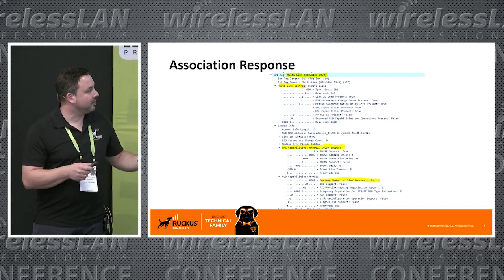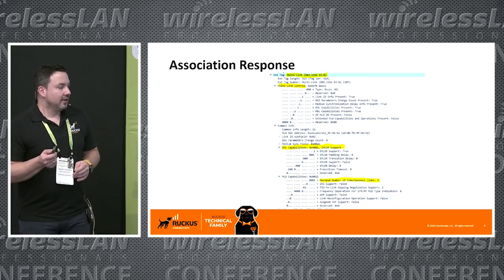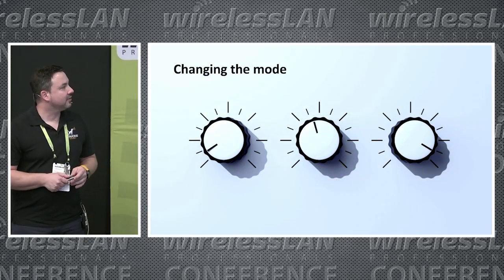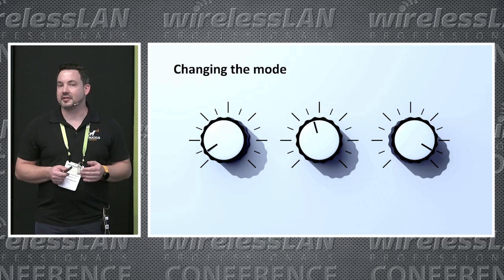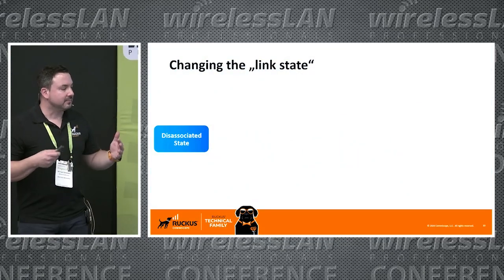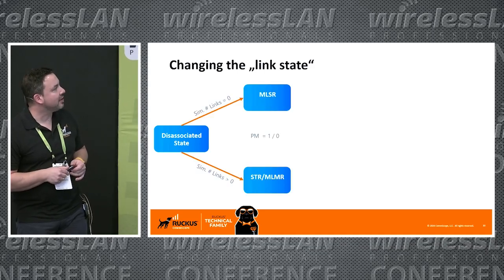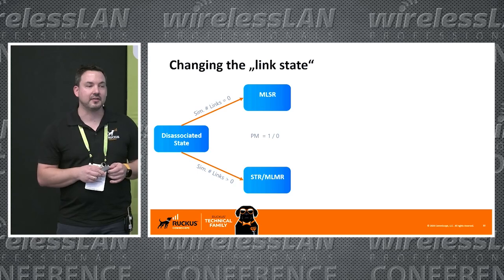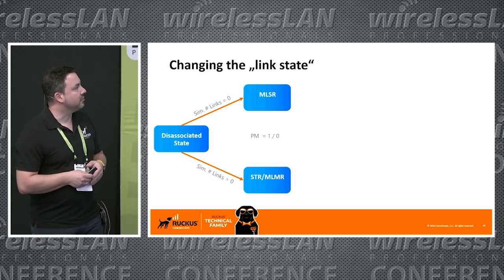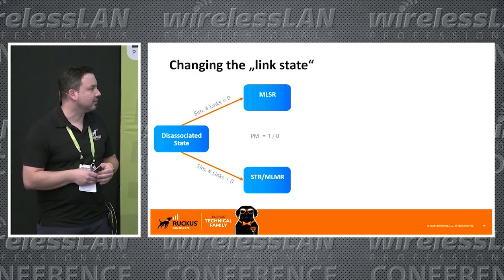So this is basic stuff — they agree on capabilities and then move on. Now let's see when the client is connected how they can change states. We have the simultaneous number of links, which is either zero or larger than zero, and then you can do either MLSR, SDR, or MLMR.